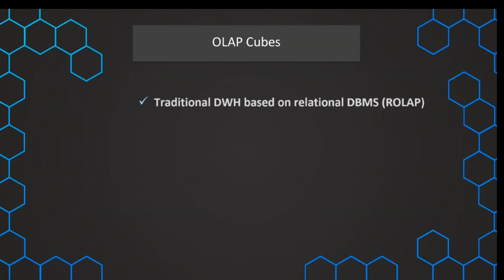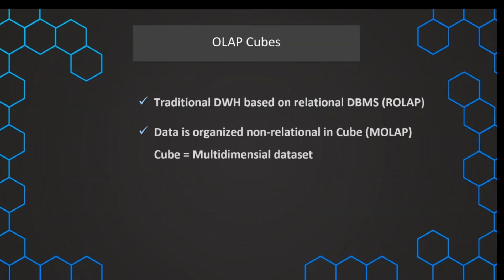In a traditional data warehouse, data is stored in a relational database where it is organized into tables that can have certain relations with each other. But in a cube, the data is not organized in tables with relations, but in a non-relational way and into dimensions. That's why we refer to this as MOLAP, because the more precise expression for a cube is a multidimensional data set.